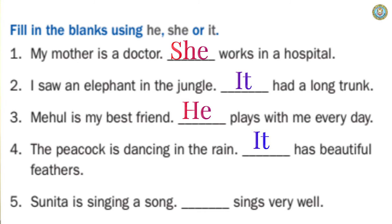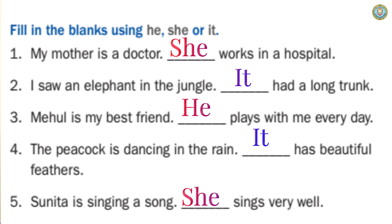Number five: 'Sunita is singing a song.' Sunita is a name of a girl. We use the word 'she' for Sunita. The answer is: 'She sings very well.' So: 'Sunita is singing a song. She sings very well.'